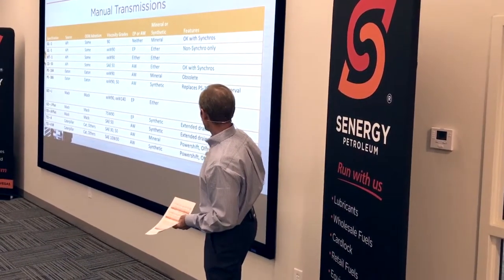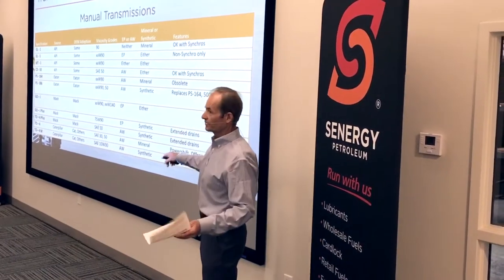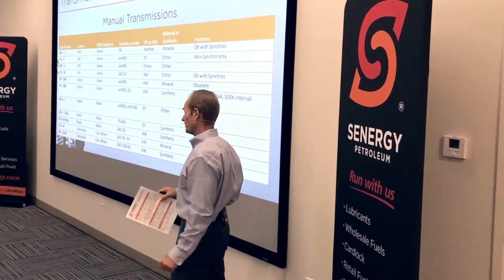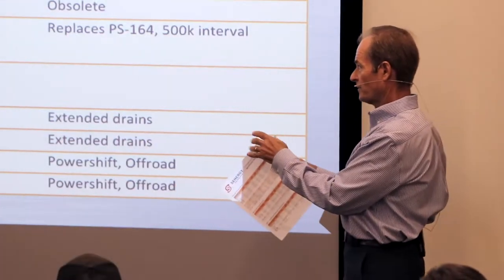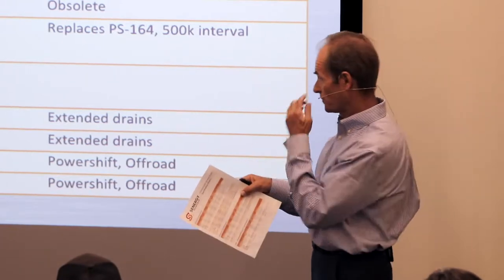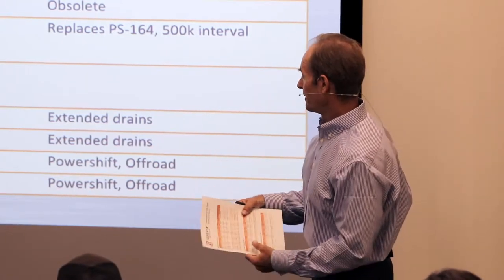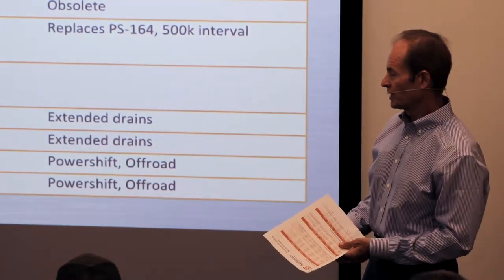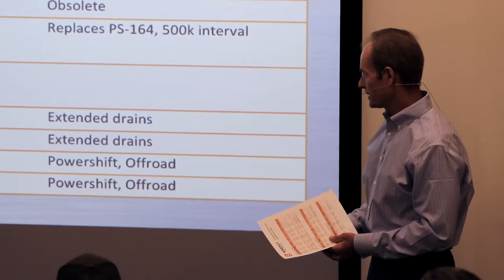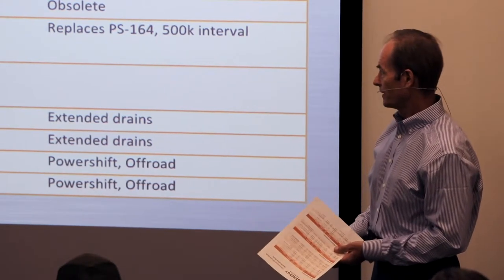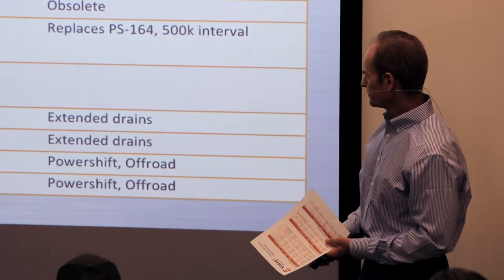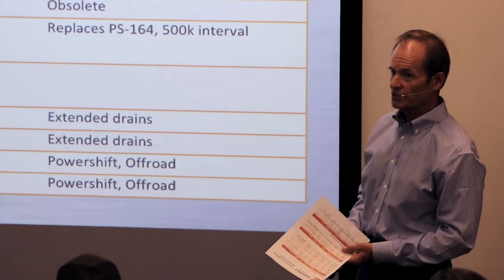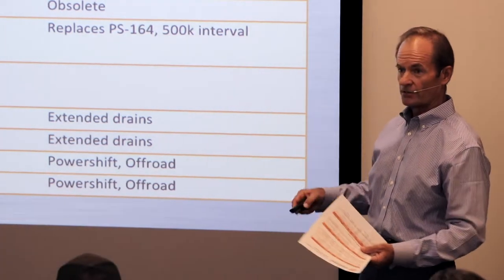I'll also make a note on the Caterpillar TO4 specification — it's been around a long time, and prior to that was the CAT TO2 specification. It's used for not just power shift transmissions; it does get used in lots of other places as well. They have also developed a specification called TO4M, which is a synthetic product and a multi-grade. It comes in around a 10W30 and allows power shift transmissions to do better in colder environments.